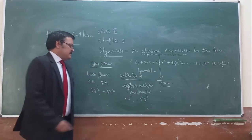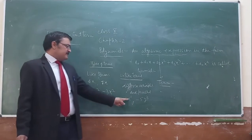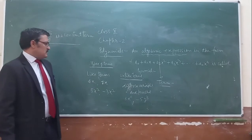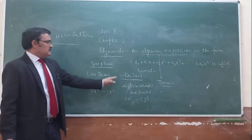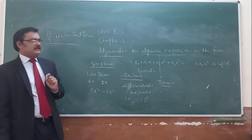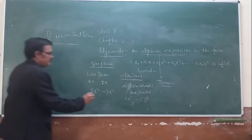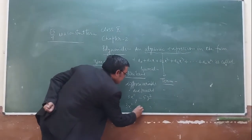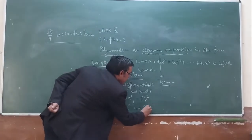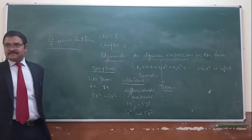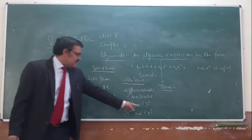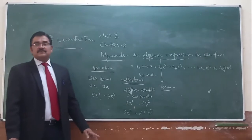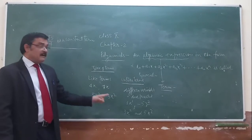3x minus 5y: variable is x here, variable is y here, power is 1 here and power is 2 there — so these are unlike terms. If I write 3x² and 5x², are these unlike terms? No — these are like terms, because variable is same and power is same.